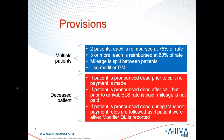If there is a multiple patient transport — sometimes ambulances will take more than one patient — for example, in a motor vehicle crash, they might be able to take two or three patients together at the same time, depending on how severely injured they are. Mileage is split between patients. They use the modifier GM, and CMS prorates the payment for each Medicare beneficiary.